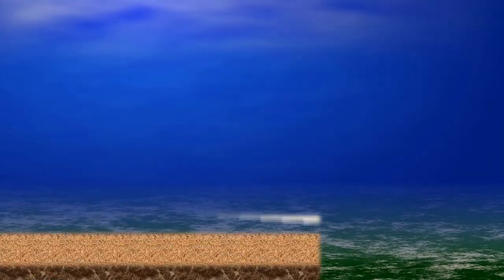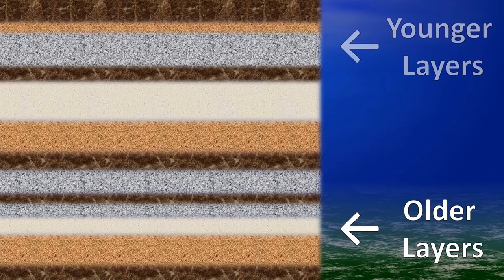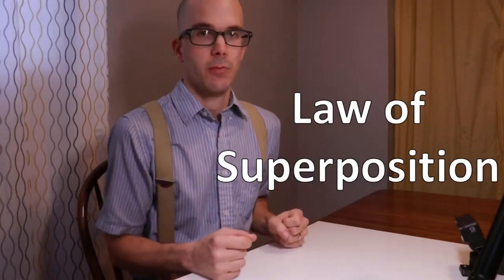Let's start with some geology basics. Rock layers form one atop the other. The bottommost layer was laid down first — it was deposited first. Then subsequent layers are stacked on top until you get to the superficial layers, which are the most recent and youngest layers, produced last. This general pattern of older layers on the bottom and younger layers on top is called the law of superposition.